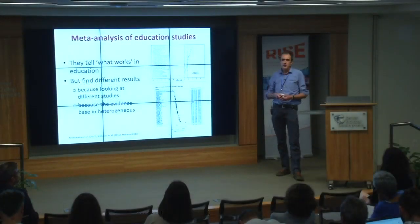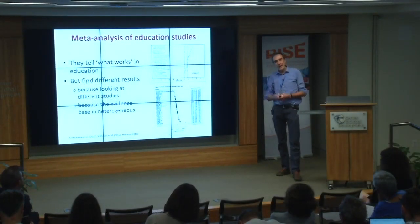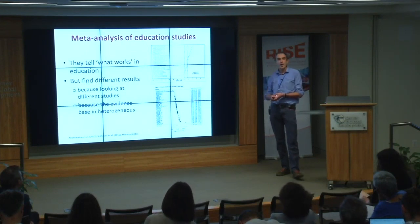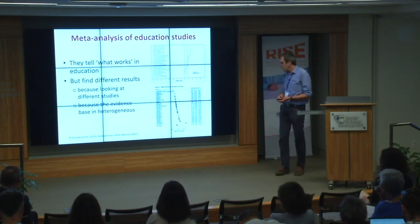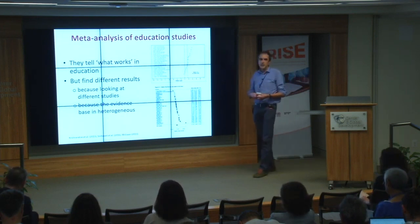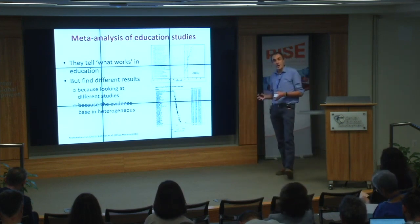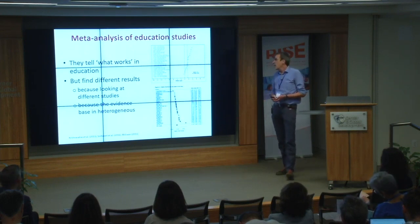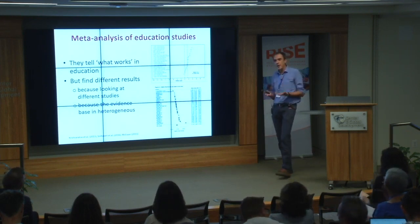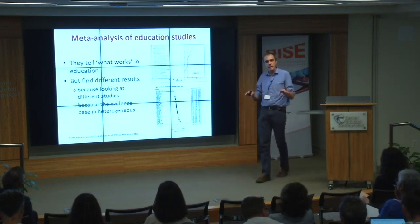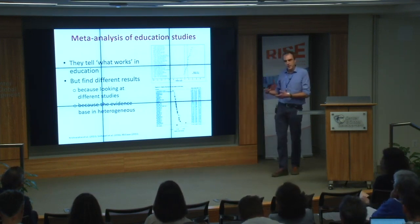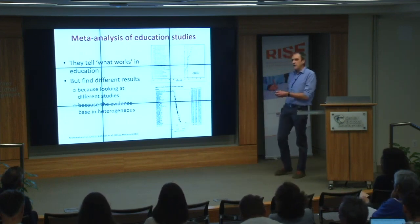One thing observed about systematic reviews and meta-analyses of education interventions is that they find different, sometimes conflicting results — partly because different reviews use different samples of primary studies. But I think that's only part of the explanation. The underlying reason is that there is so much heterogeneity in the results of studies that, if studies were homogeneous, taking different samples would not produce different results.